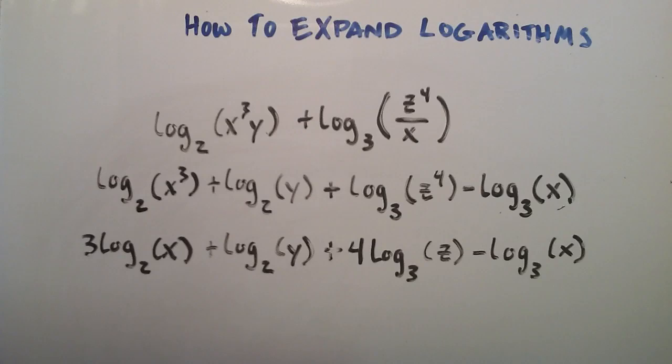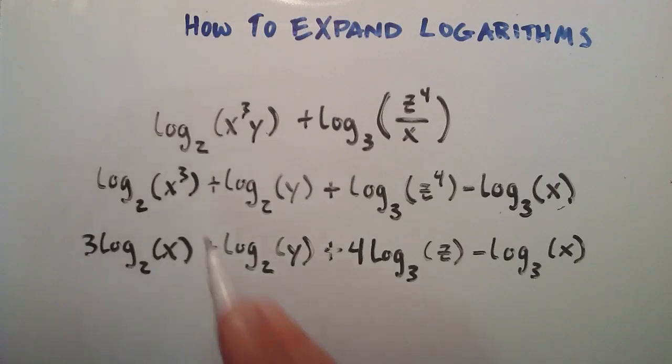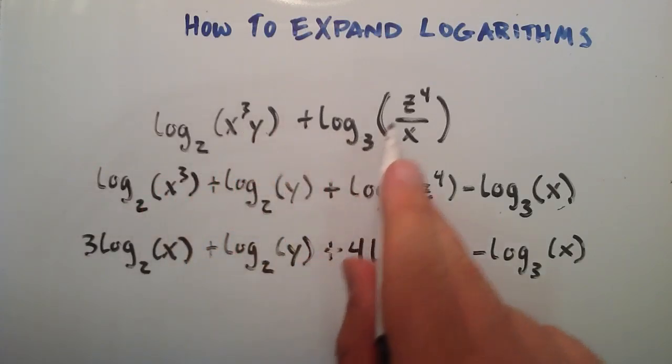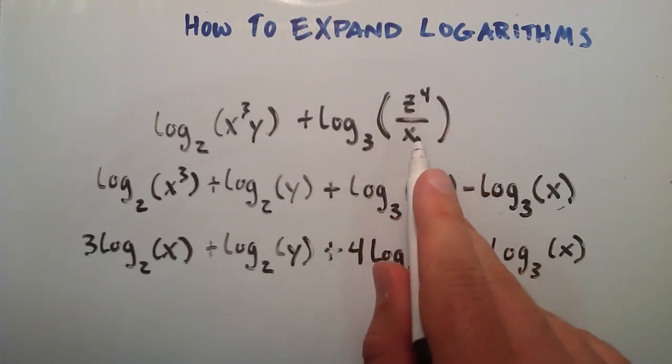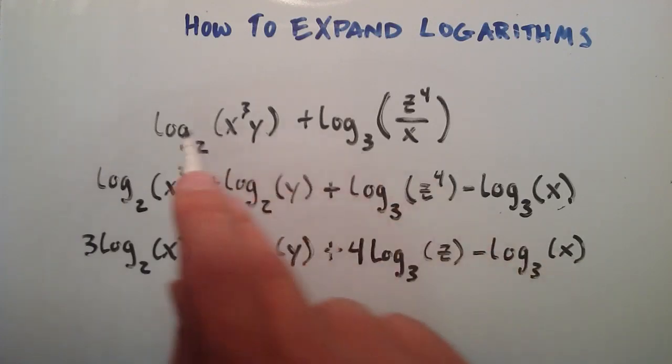So this was just another short example on using properties of logarithms to expand an expression of logarithms. So basically, log base 2 of x to the third y plus log base 3 of z to the fourth divided by x is equivalent to saying 3 times the log base 2 of x plus log base 2 of y plus 4 log base 3 of z minus log base 3 of x.